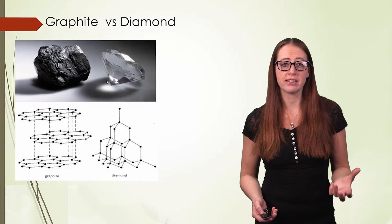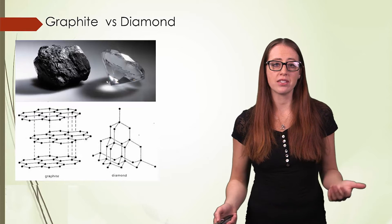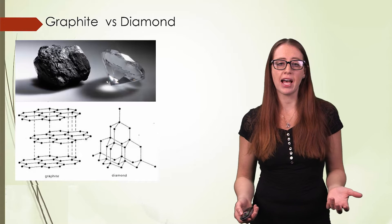Graphite forms sheets of molecules, and these sheets can slide across each other, giving it the properties that we think of graphite as having.